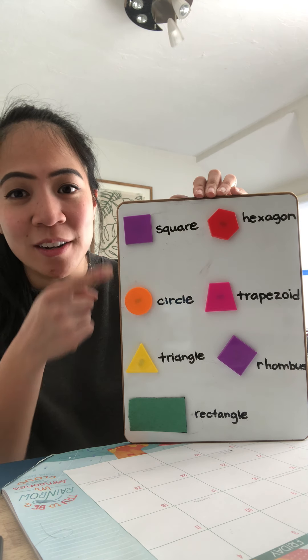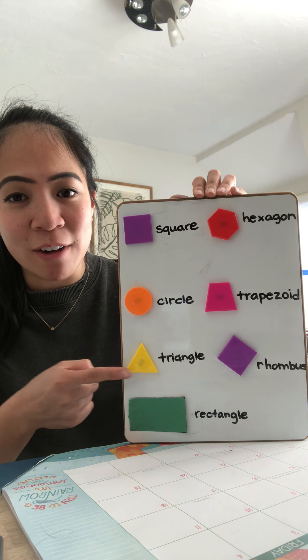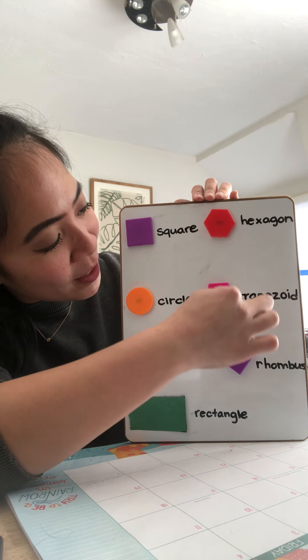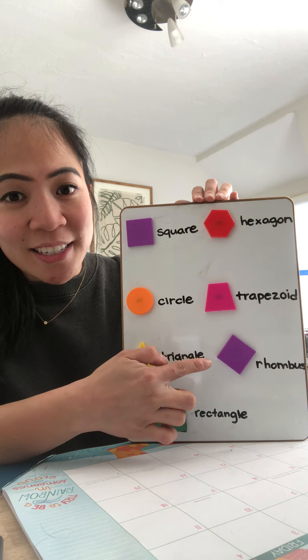Okay, so we have a square, circle, triangle, rectangle, hexagon, trapezoid, and a rhombus.